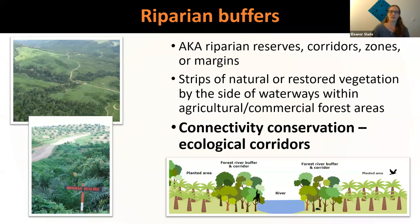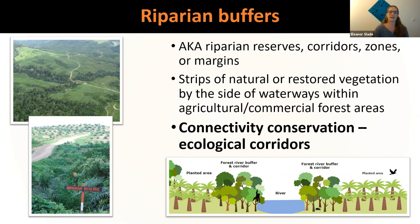So what are riparian buffers? When we talk about riparian buffers, these are also known as riparian reserves, riparian corridors, riparian zones, or riparian margins. These are usually strips of natural or restored vegetation by the side of waterways within agricultural or commercial forest areas. The IUCN guidelines for conserving connectivity have just been produced, really talking about connectivity conservation and ecological corridors — and this is what riparian buffer strips can really act as, providing a supporting role for protected areas and building ecological networks across the whole landscape.